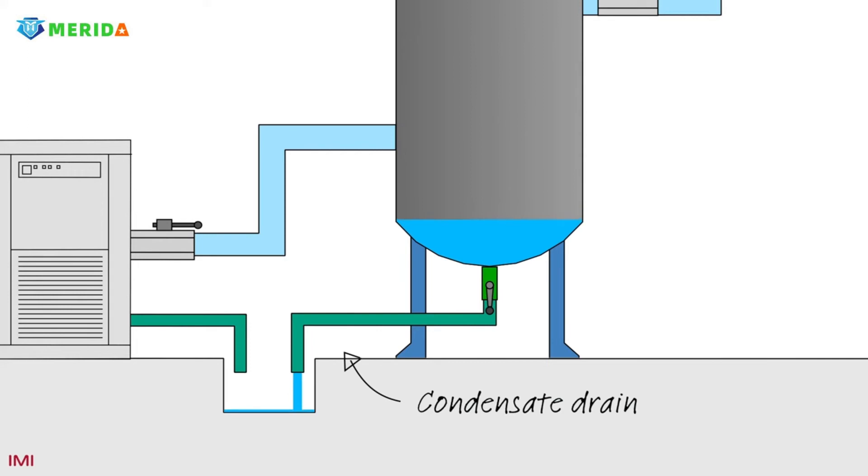The condensate drain allows that water to drain away. It may be a legal requirement in your country to dispose of this correctly as it could contain oil and other contaminants. The drain valve allows this drain to be switched on and off.